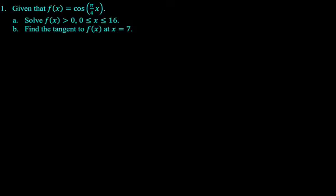Given that f of x equals the cosine of pi over 4x, we want to solve f of x is greater than 0 on 0 to 16. You're gonna see this type of problem within other problems. It's not really like a calculus problem, but sometimes you have to figure out where something is positive or negative.